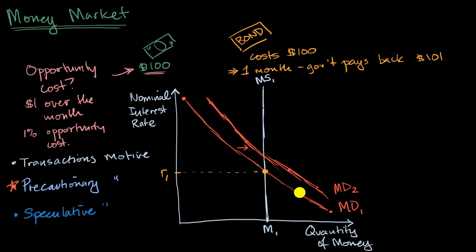...well then what happens to the actual equilibrium nominal interest rate? If you look at this point right over here, assuming that the quantity of money has not changed, you have a new equilibrium interest rate, nominal interest rate. It has gone up.